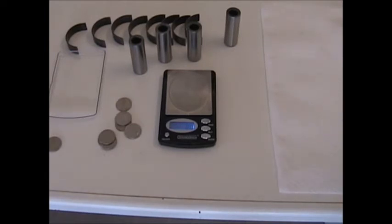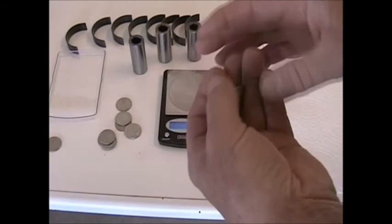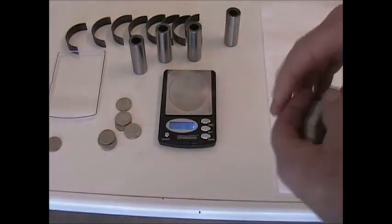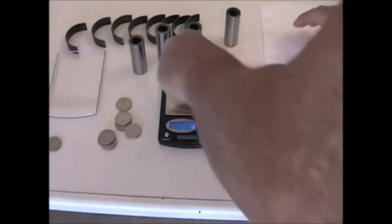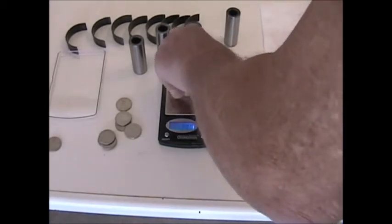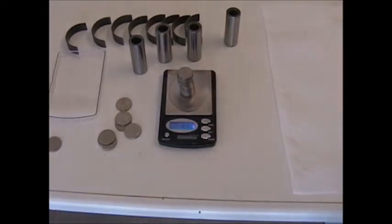A nickel should weigh 5 grams. Since these are all old and beaten up, we probably don't expect that. But I've got 20 nickels here, so we should show 100 grams on the scale. 99.6. That's probably because they've been in my pocket for a long time.